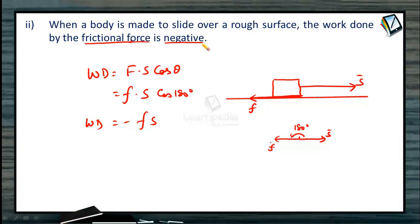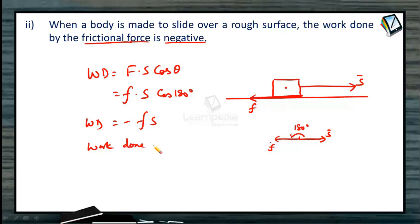Friction force is trying to oppose the motion of the body. As I told you, negative work done signifies that the external force opposes the motion of the body. This body is trying to move forward; friction force is trying to resist it. So work done by friction force is always negative.